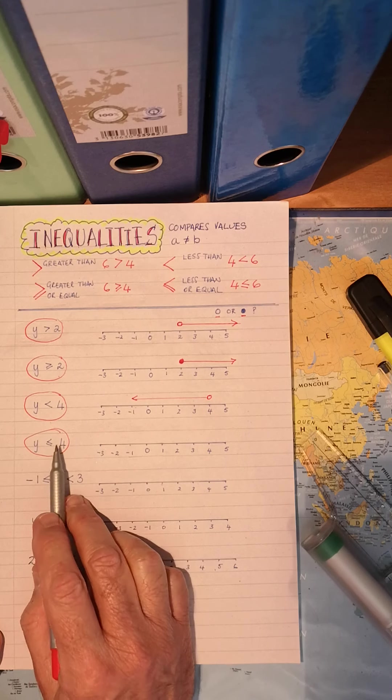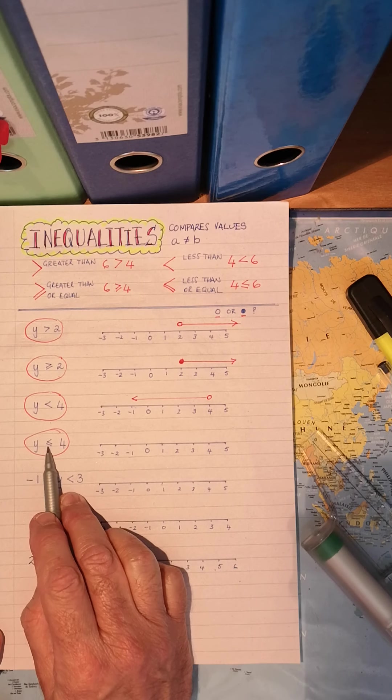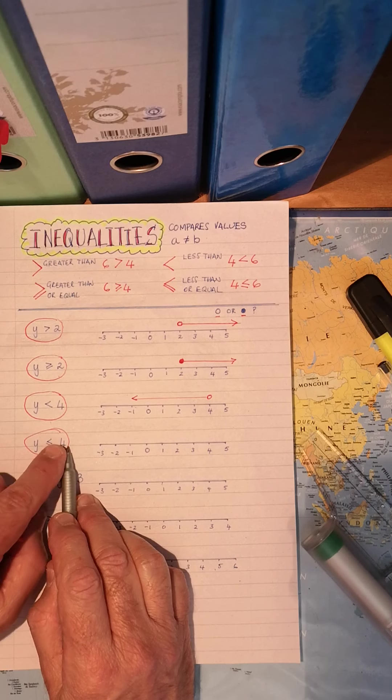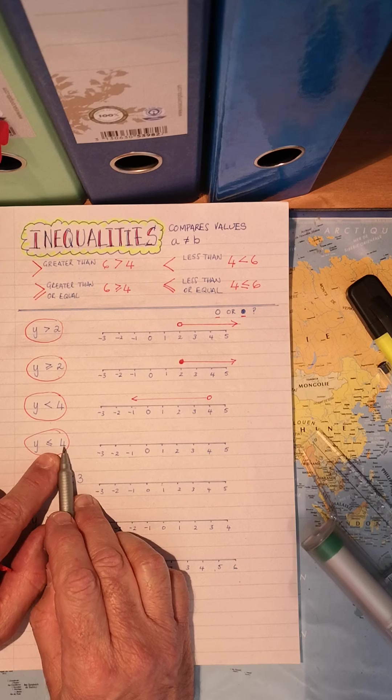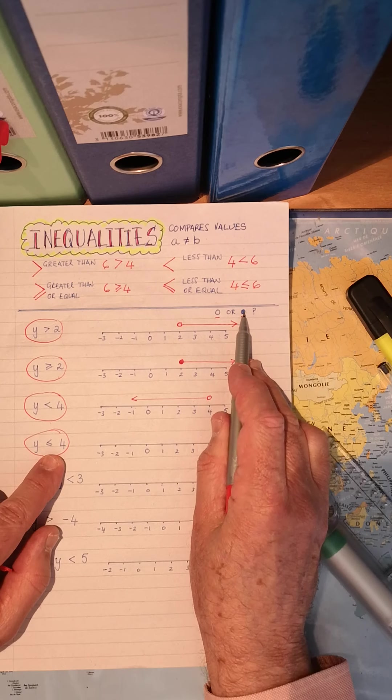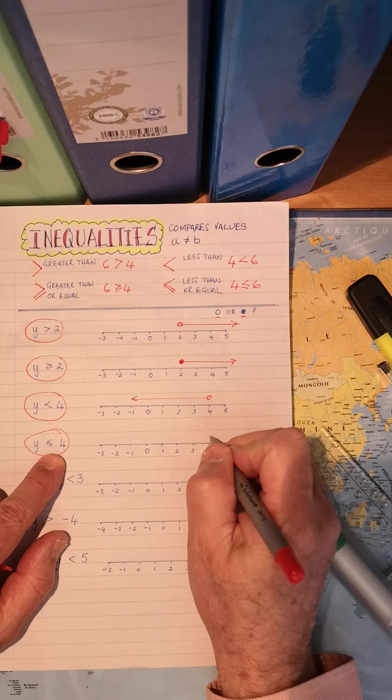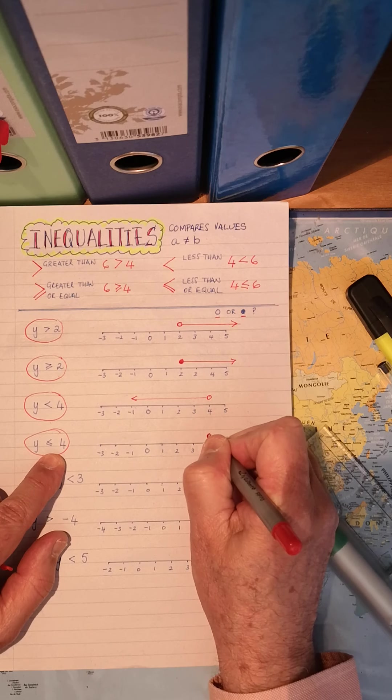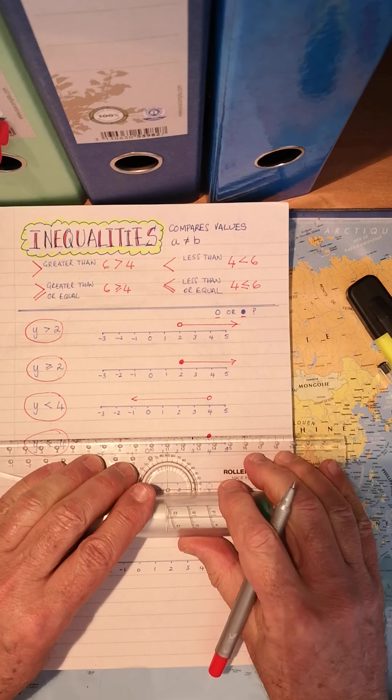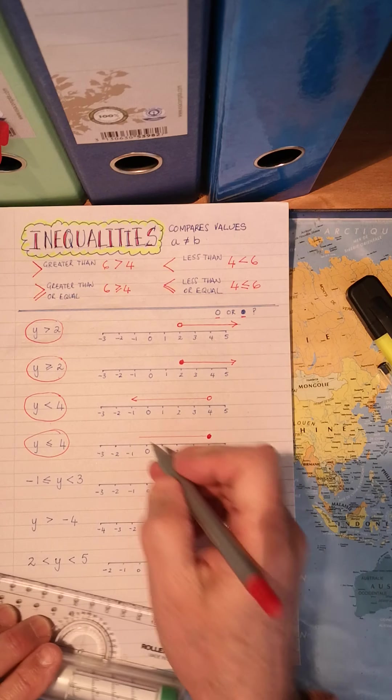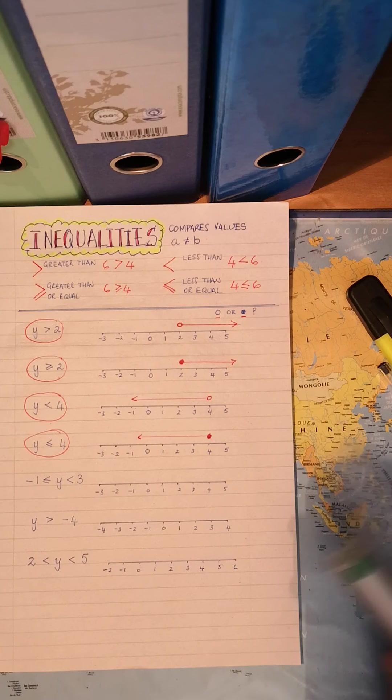Y is less than or equal to four. I think you've got it by now. Equal to less than. It's going to be a closed circle. Right. Again, going down. Numbers get smaller.